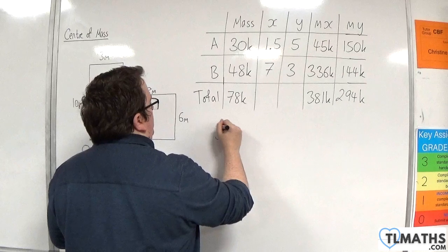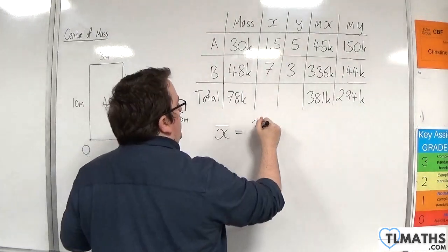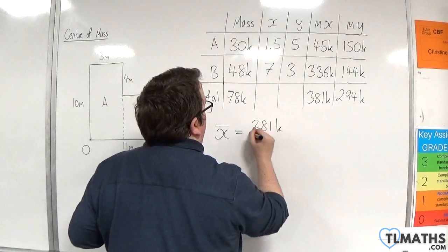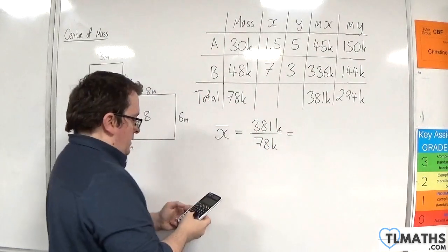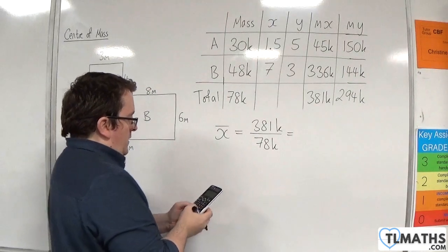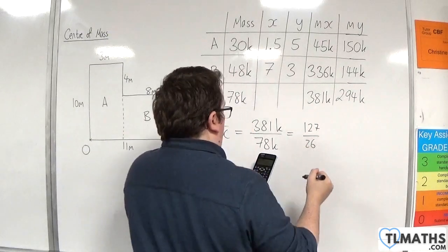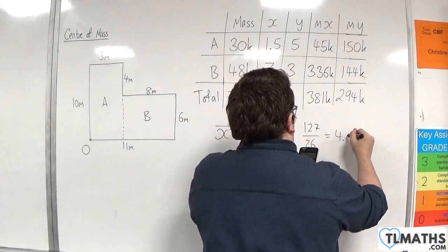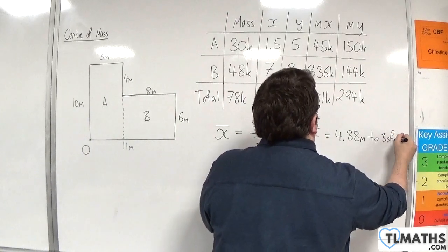So for our X bar, the average of the X, we've got 381K divided by 78K. So 381K divided by 78 is 127 over 26, which is 4.88 meters to three significant figures.